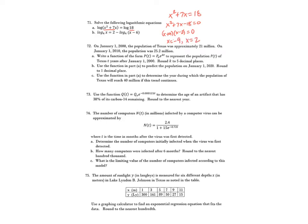We need to plug both values back in to check for extraneous solutions. Plugging negative 9 in gives 81 plus 7 times negative 9, which is positive 18 — that's fine. Plugging in 2 gives 4 plus 14, also positive. Since neither inside value is negative, both solutions are valid.